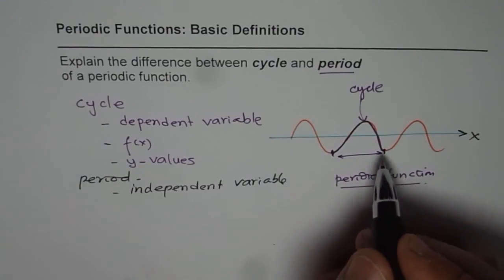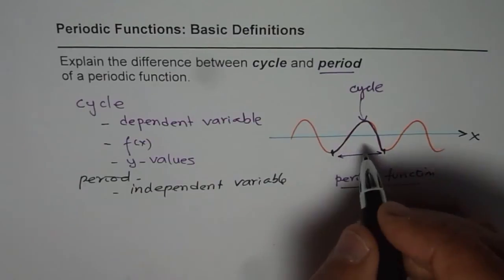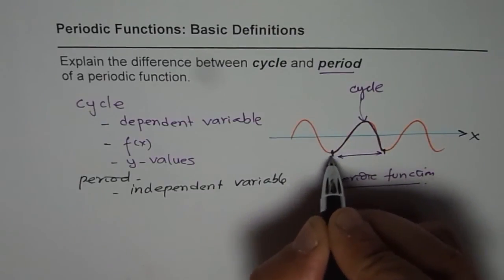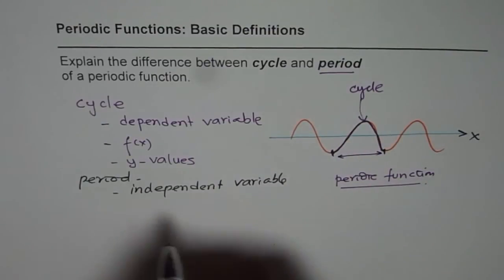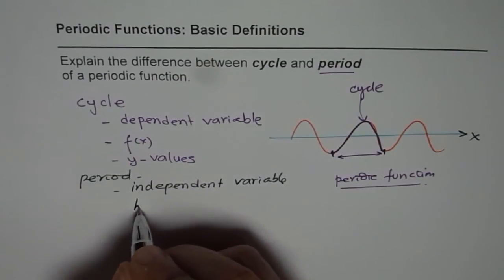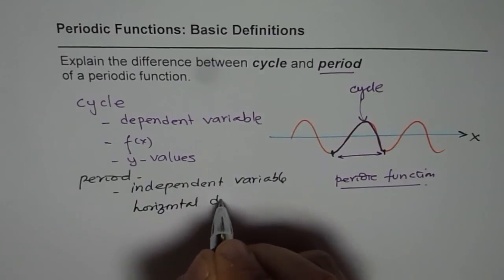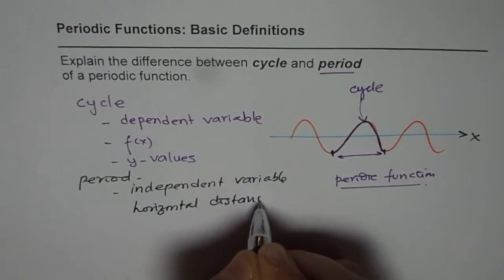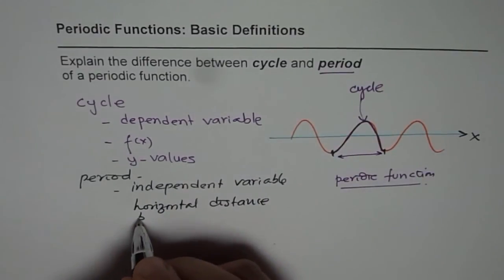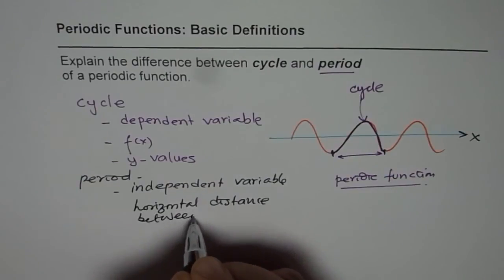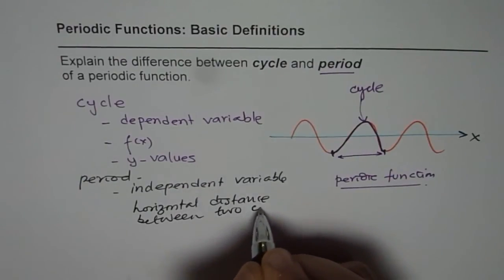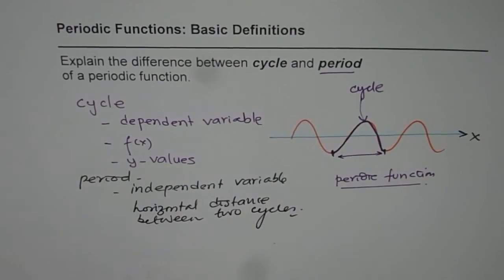So that is the period. So in this case the period is this distance, the horizontal distance. So independent variable or you can say horizontal distance between two cycles. You understand?